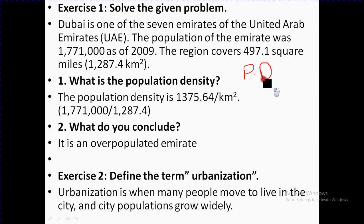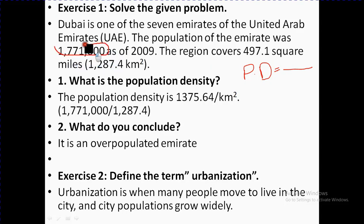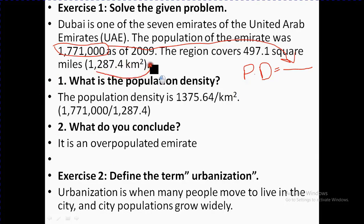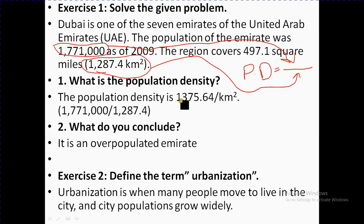PD is equal to the total number of persons divided by the land area in square kilometers. We put the total number of persons over the land area and divide them. After that, you get the answer — this is the total population density.